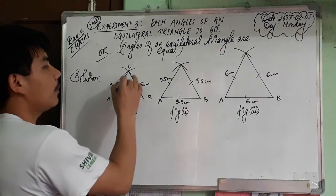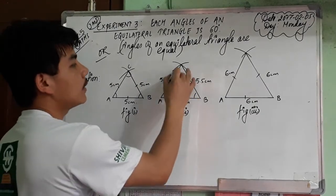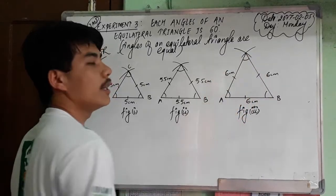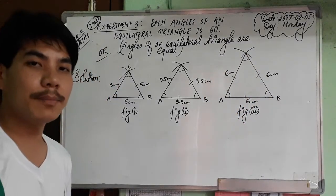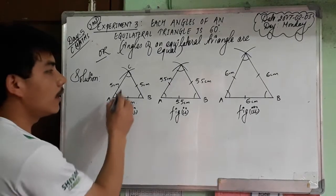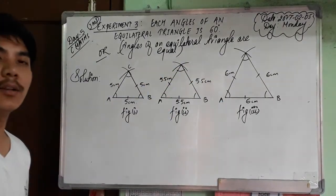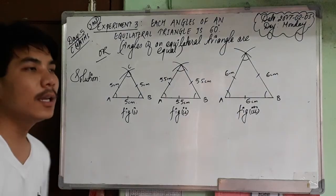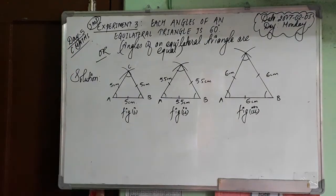Measure angle A, angle B, and angle C for each triangle — likewise angles A, B, C for the second and third triangles. Their measurements must be 60 degrees. Let's measure the 3 angles of each equilateral triangle and fill in the given table below.